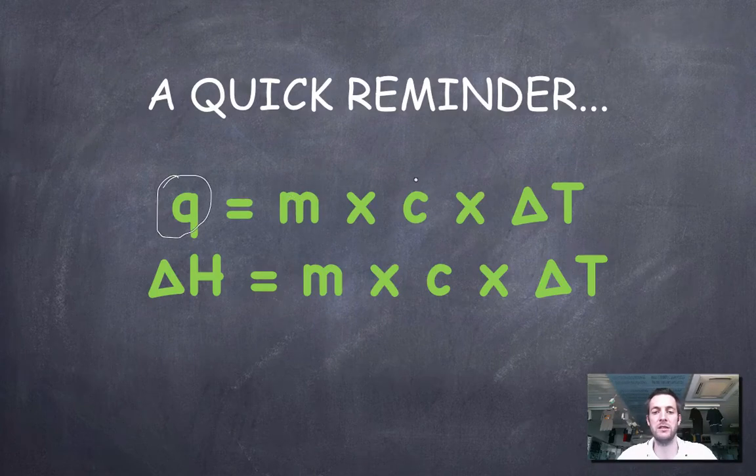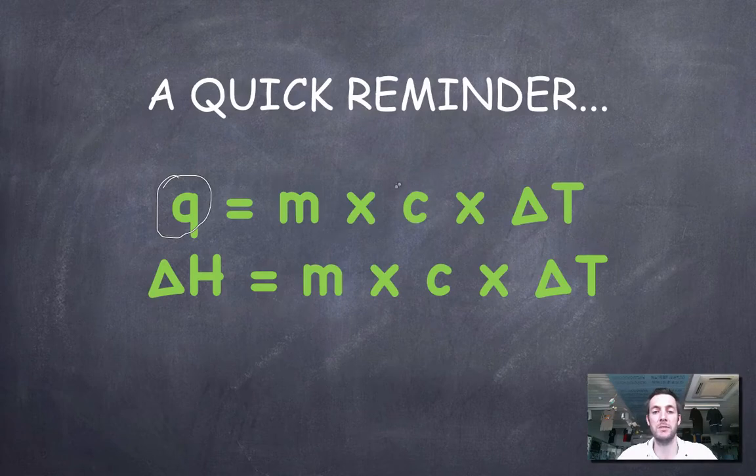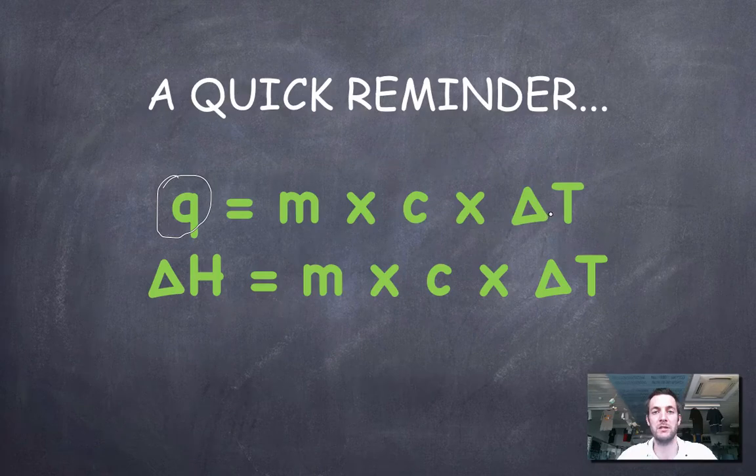You take the mass of the substance you've heated, multiply it by the specific heat capacity of that substance and the temperature change that you observed in that substance.